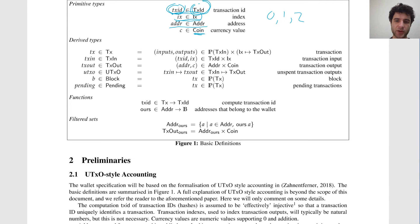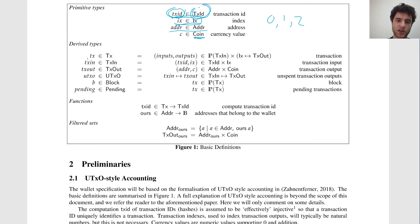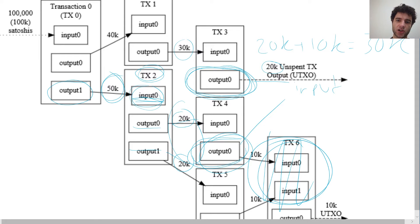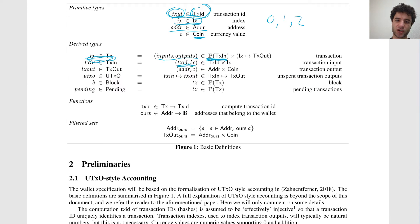Next we have some more complicated types based on these primitives. One of them is a transaction, which is a pair of inputs and outputs. An input is a transaction ID and an index. If you think back to the diagram, you have some transaction ID and then some index within your inputs — that makes sense as a definition for a transaction input. So a transaction input is a transaction ID followed by an index.